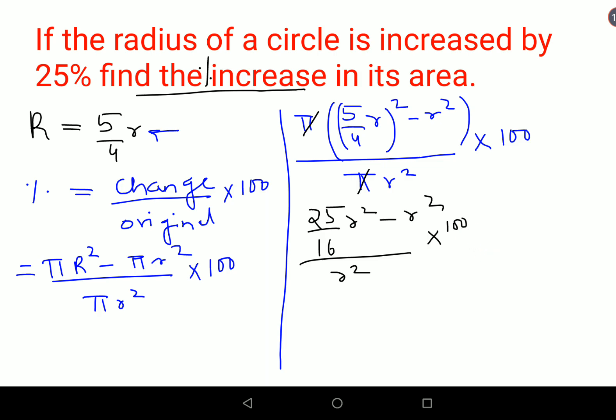So this then comes out to be, see again the r square can be taken outside. So I am left with 25 upon 16 minus 1 upon r square into 100. So this is cancelling. Then I am left with 25 upon 16 minus 1 into 100.